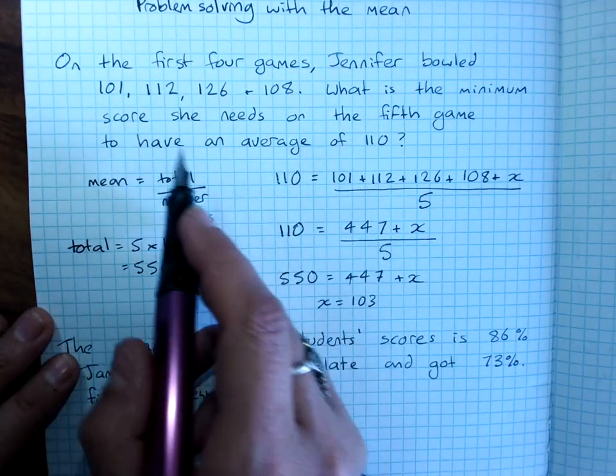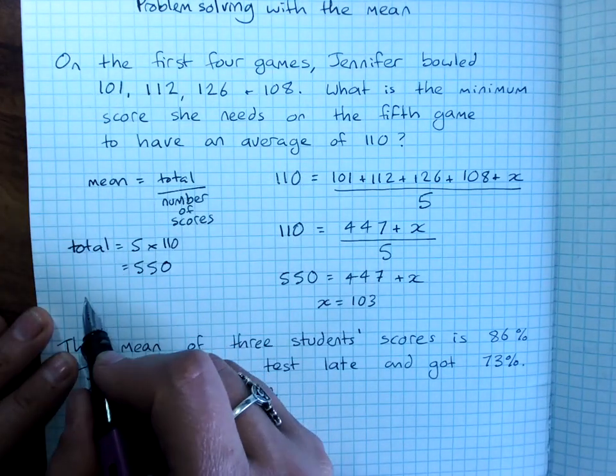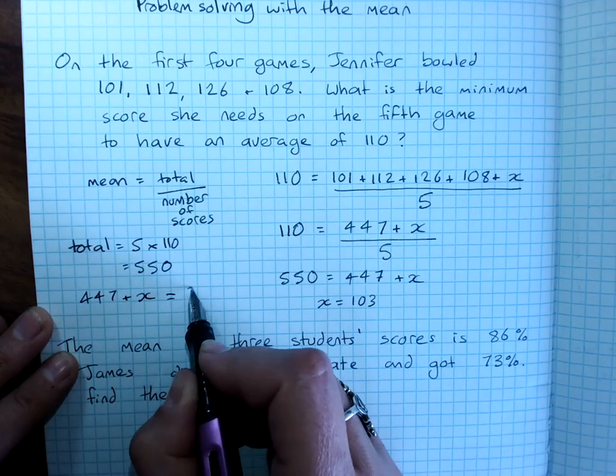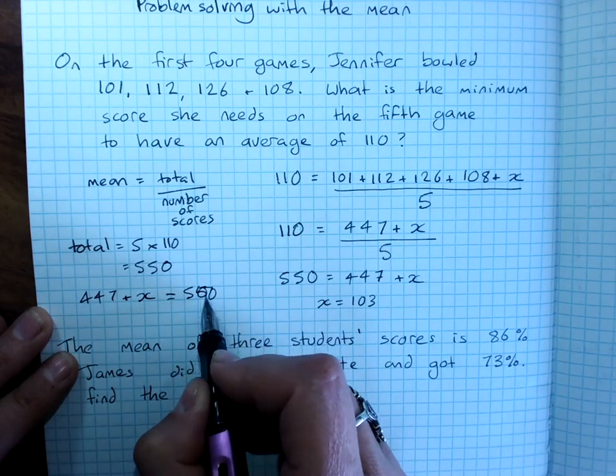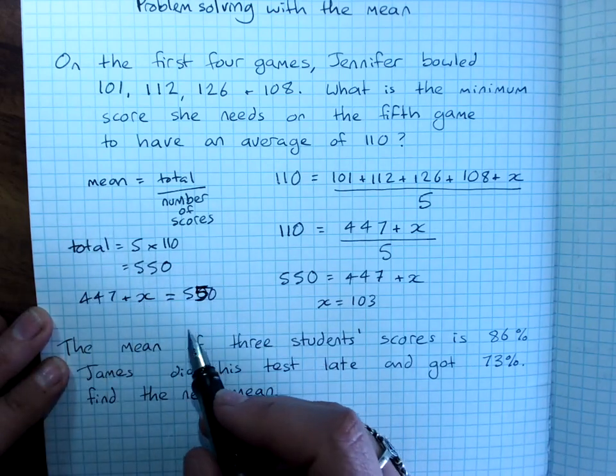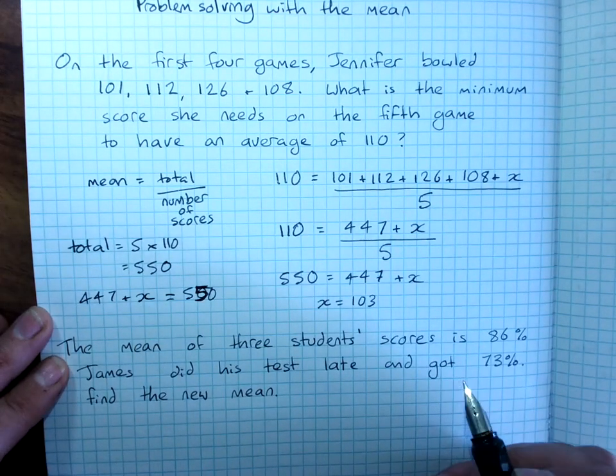So, we added all of those up. There's going to be 447 plus whatever we need has to be 550. And you can work that one out. So, you can just reason it out or you can show proper equation working.